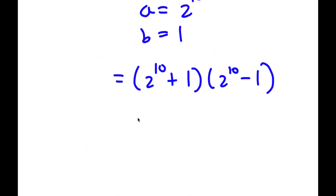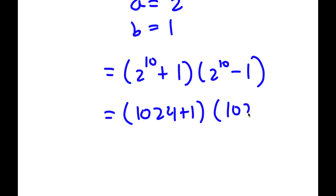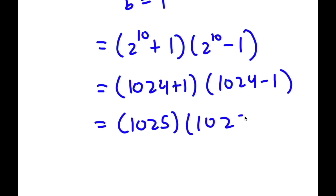And 2 to the power of 10 is 1,024. So now I have 1,024 plus 1 times 1,024 minus 1. Now, 1,024 plus 1 is going to equal 1,025, and 1,024 minus 1 is 1,023. So I have 1,025 times 1,023.